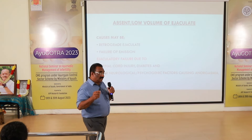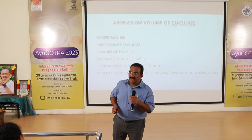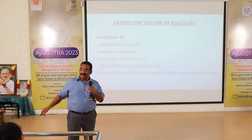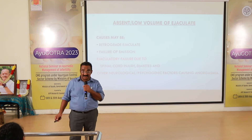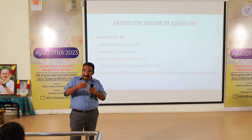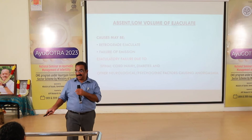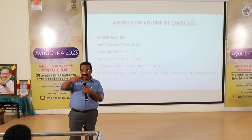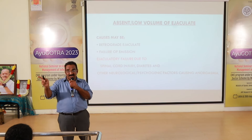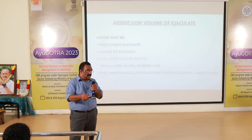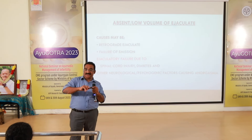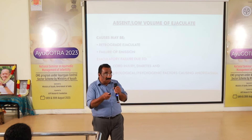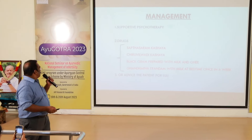In cases of retrograde ejaculation, to collect spermatozoa, the patient is asked to void completely before ejaculation to minimize mixing of urine with spermatozoa. Then the patient is allowed to ejaculate, and the ejaculate is collected by catheter.